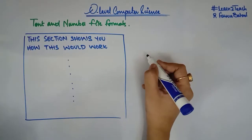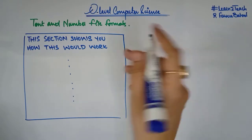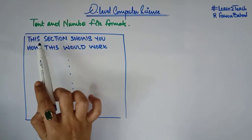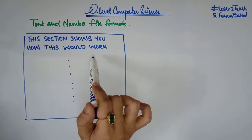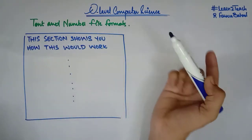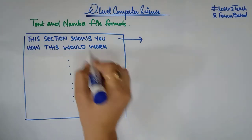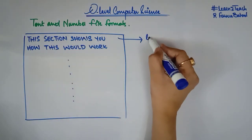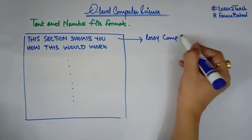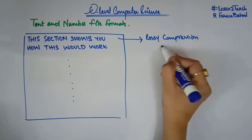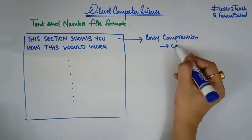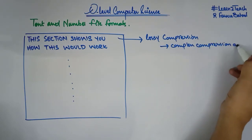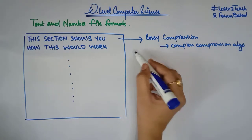Here is a simple example. I have a text file containing: 'this section this section shows you how this would work.' If I am going to compress this using lossless compression, there must be a complex compression algorithm for that. Let's see the steps.